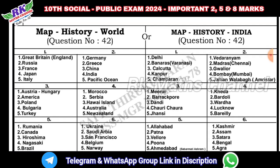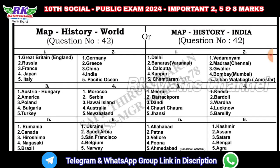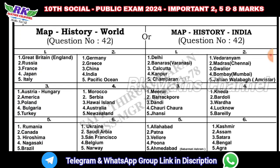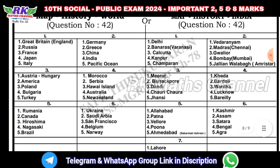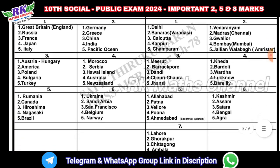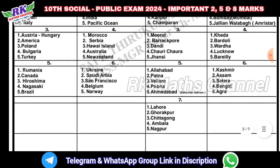Question number 42 is the map question — the old world map and the India map. The countries to mark include Great Britain, Russia, France, Japan, Italy, Germany, Greece, China, and India. Question number 42 covers both the old map and the India map.